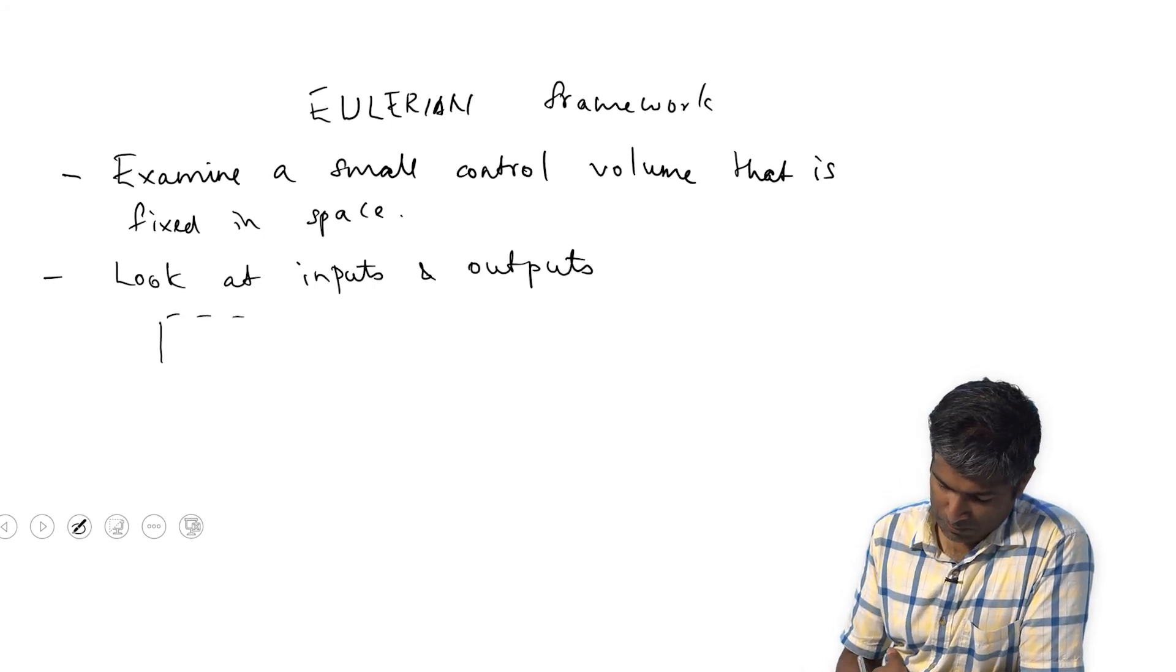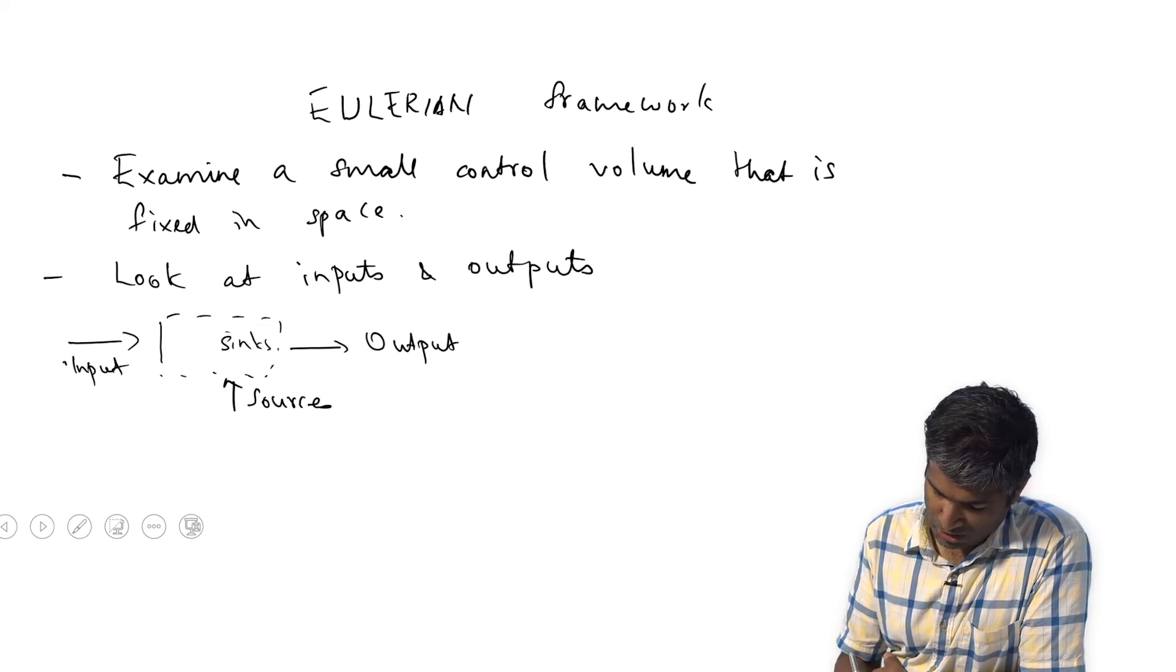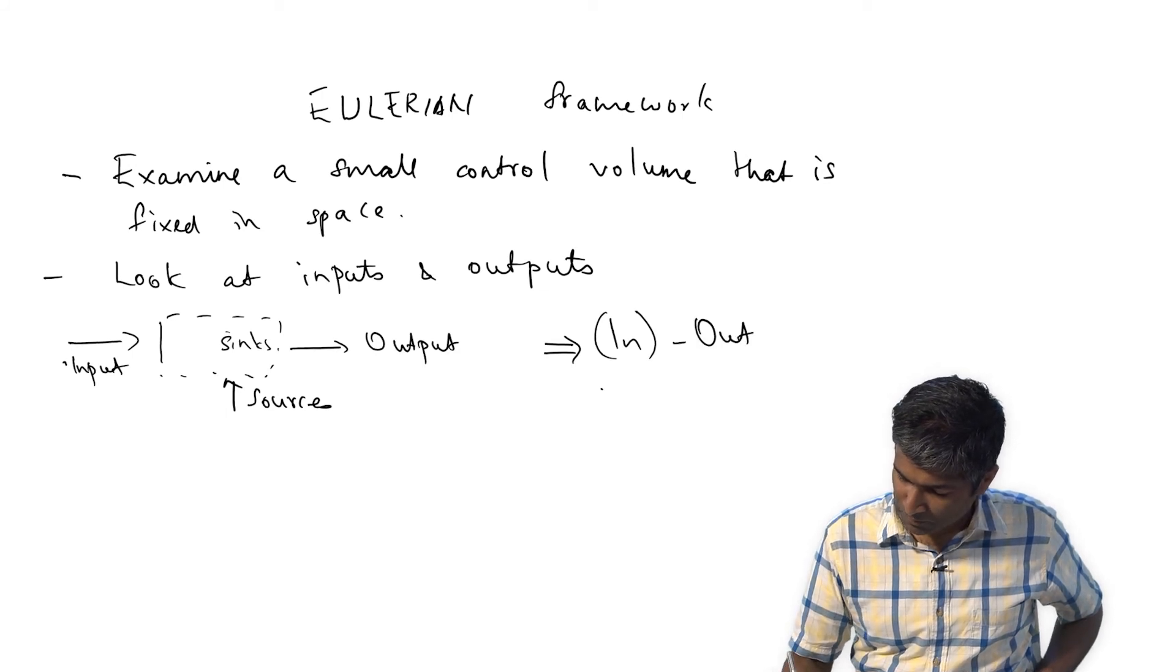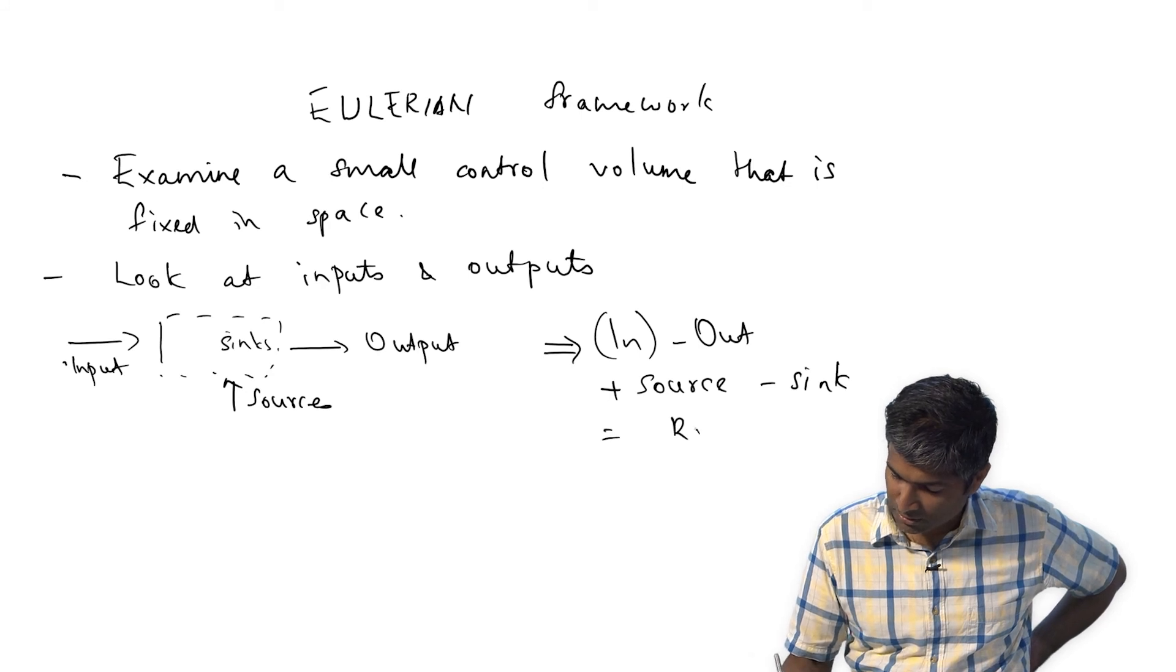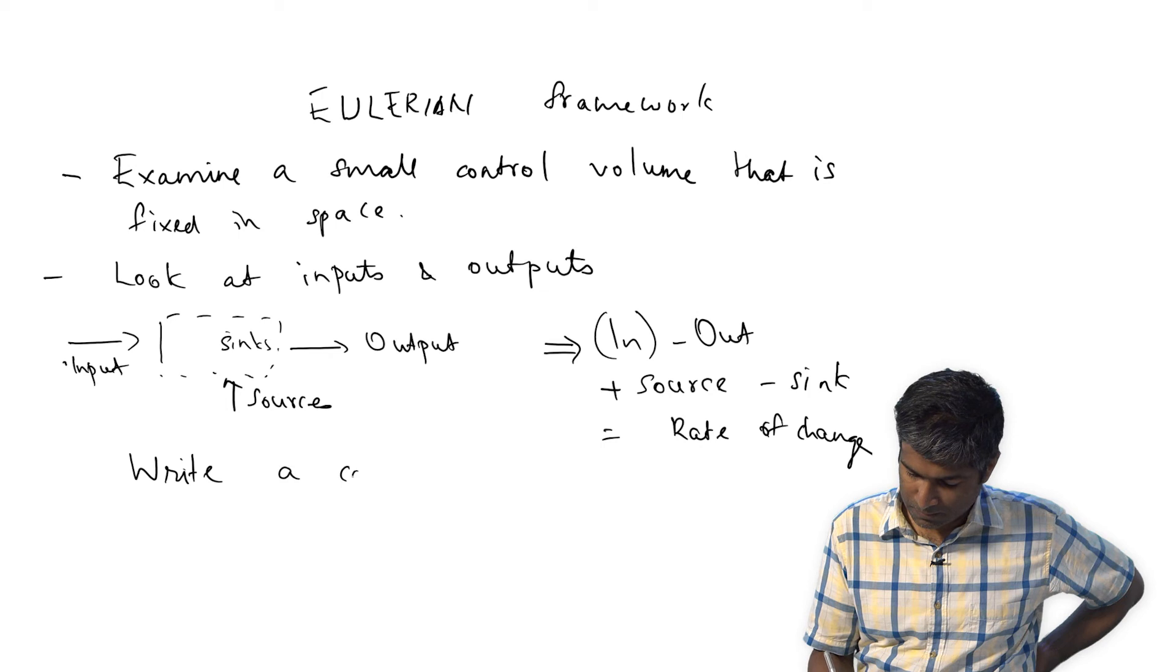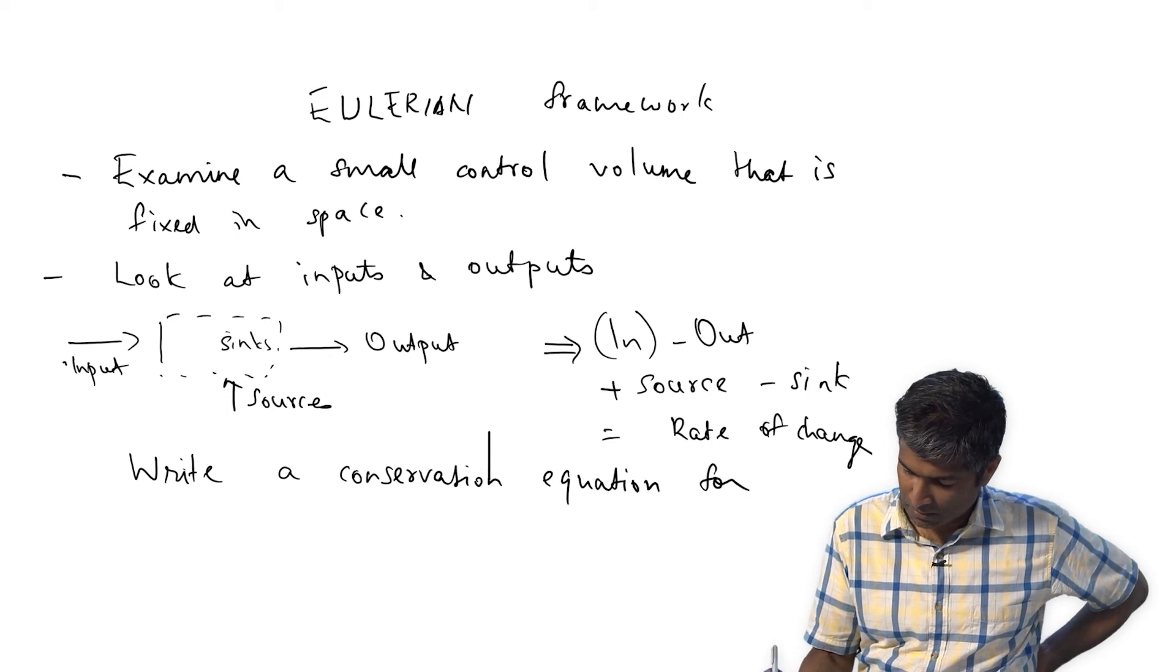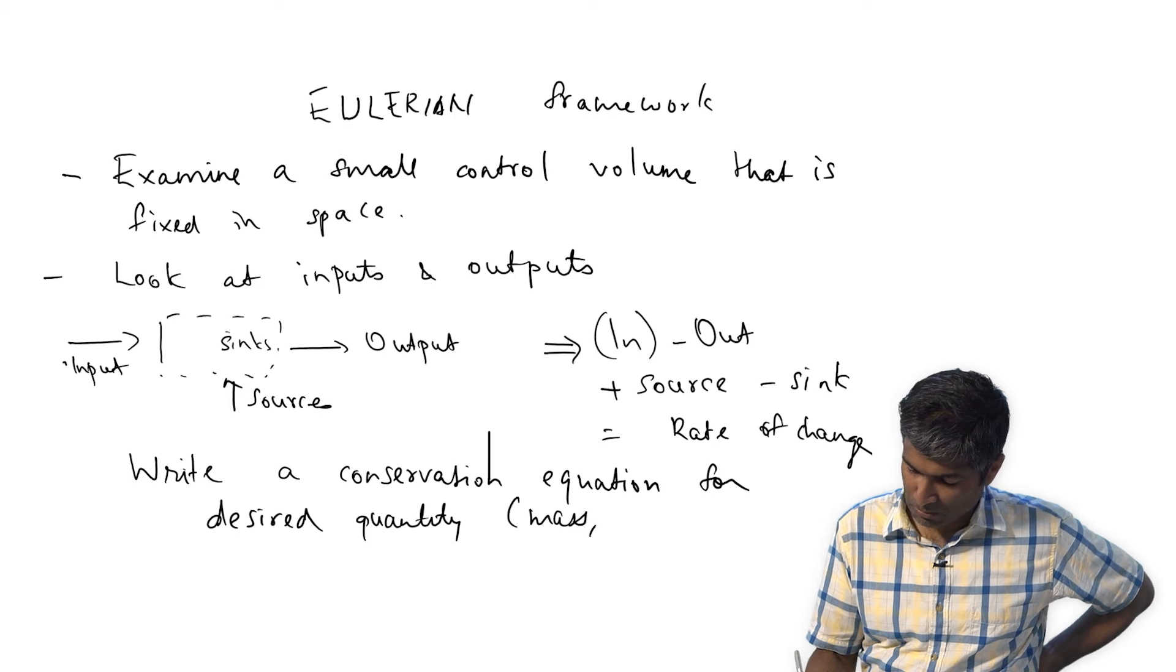This uses the control volume concept, which means I essentially examine a small control volume that is fixed in space. I look at inputs and outputs to that control volume. I have this control volume, I know there's so much mass going in, so much mass and momentum going out. There might be sources of mass or momentum, and there might be sinks of mass or momentum in the control volume. So I basically write in minus out plus source minus sink equals rate of change. That's my conservation equation for the desired quantity, which can be mass, momentum, energy, and so on.